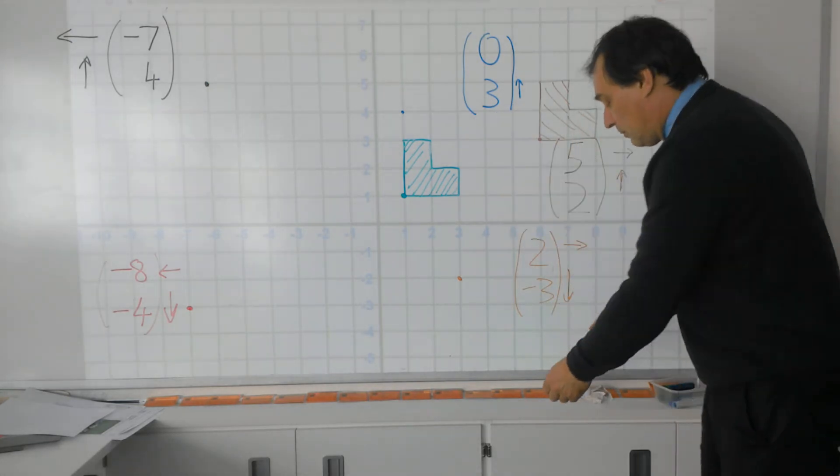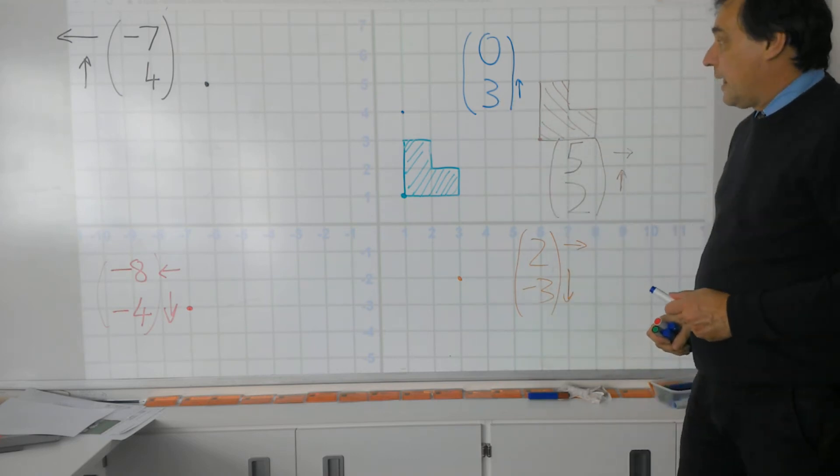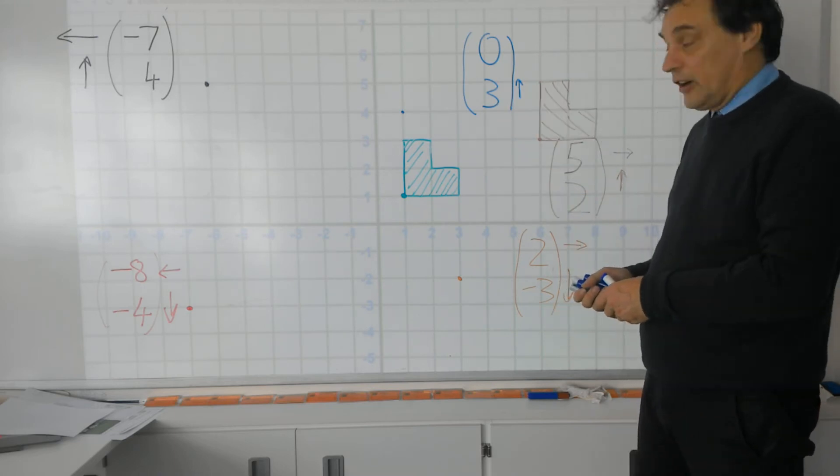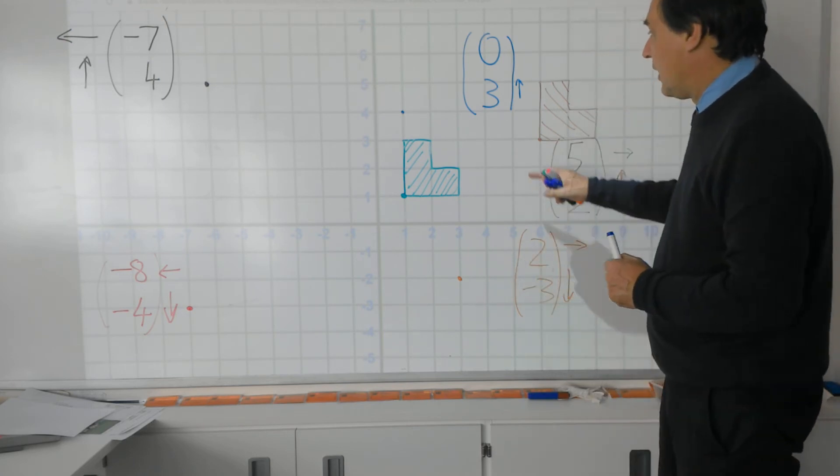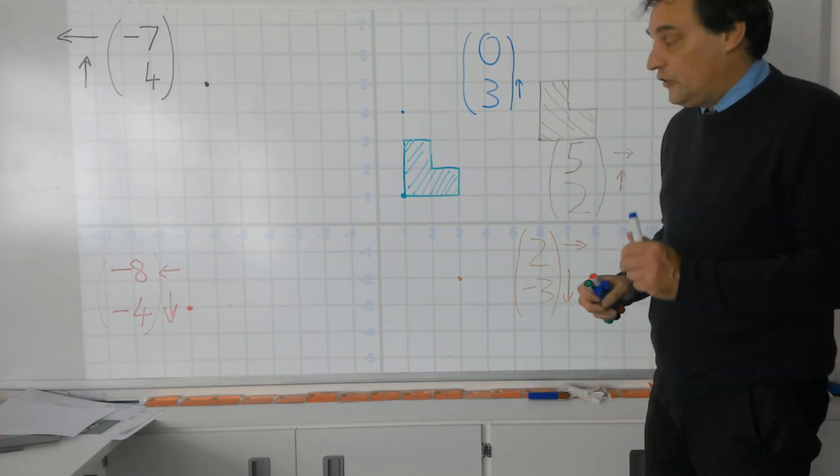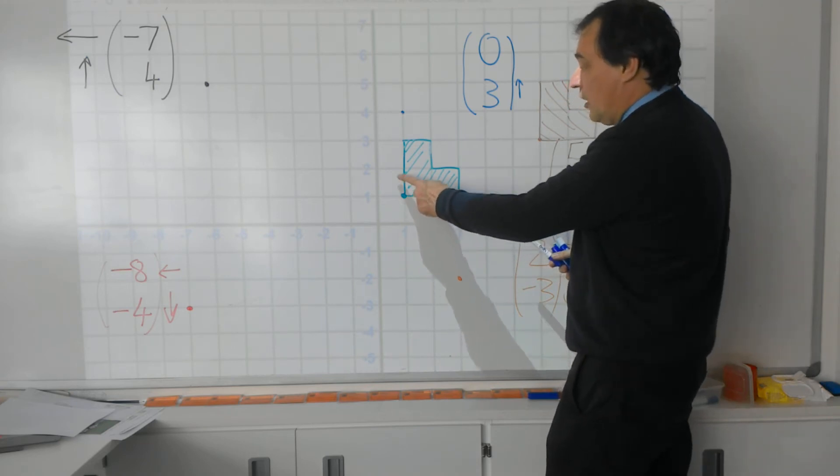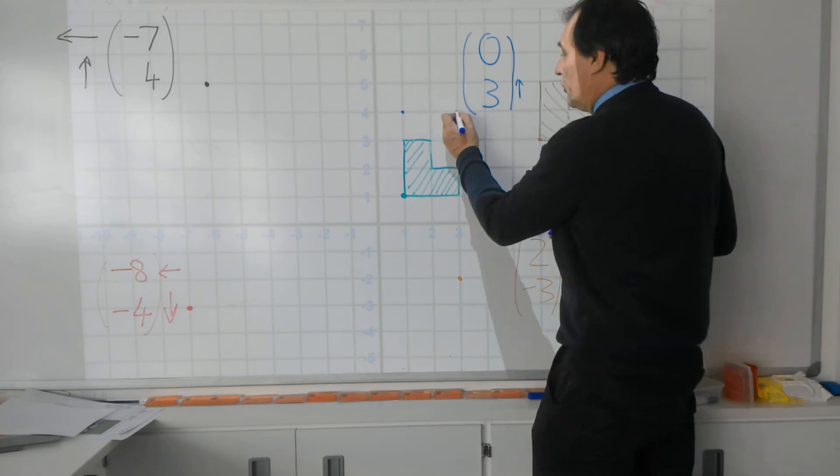Let's have a look at the blue one. Supposing now I'm going 0, 3. Well 0 means I don't move it anyway in the across direction, it stays where it is. So I'm just going to focus on the up and down direction, and the 3 means I've got to move my green dot, my reference corner, up 3: 1, 2, 3, and then I simply draw the shape.